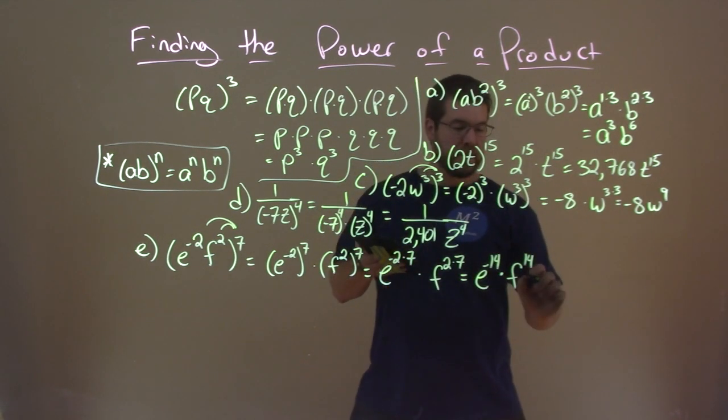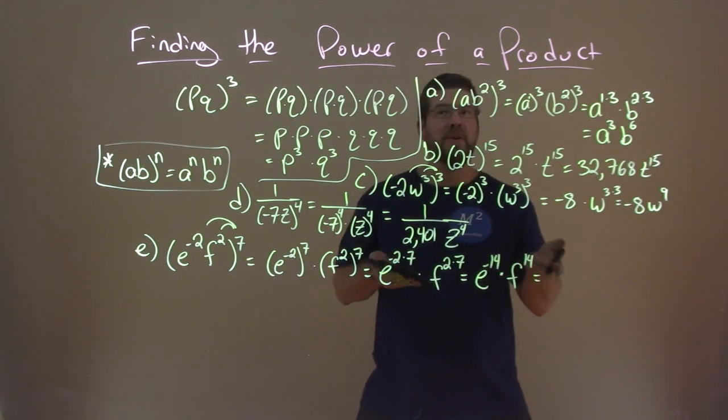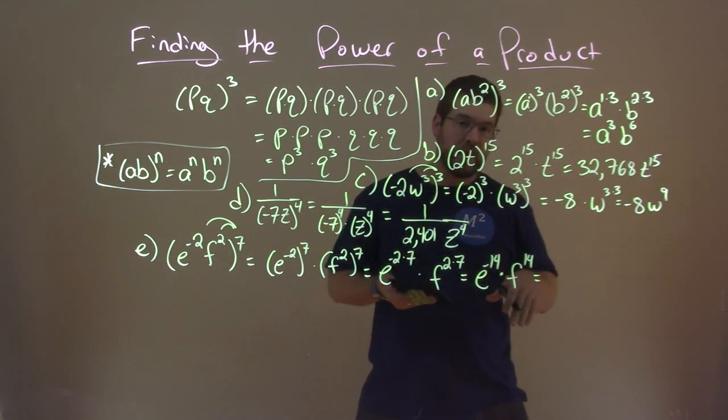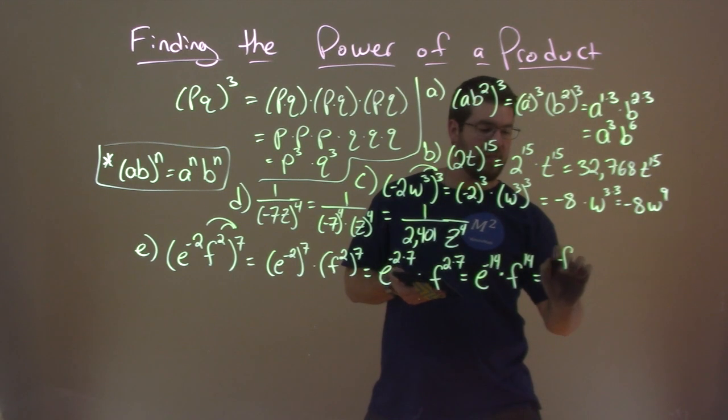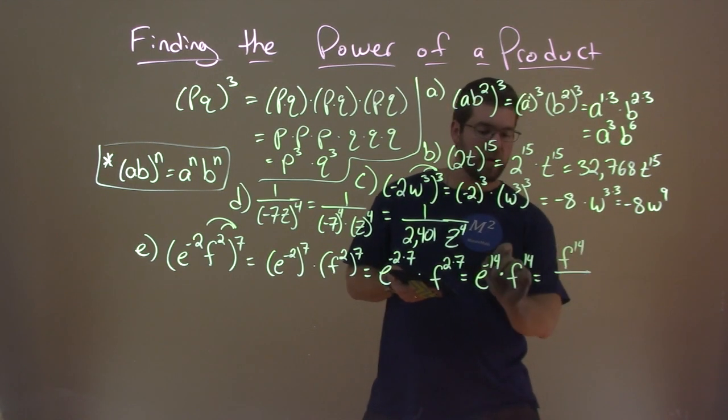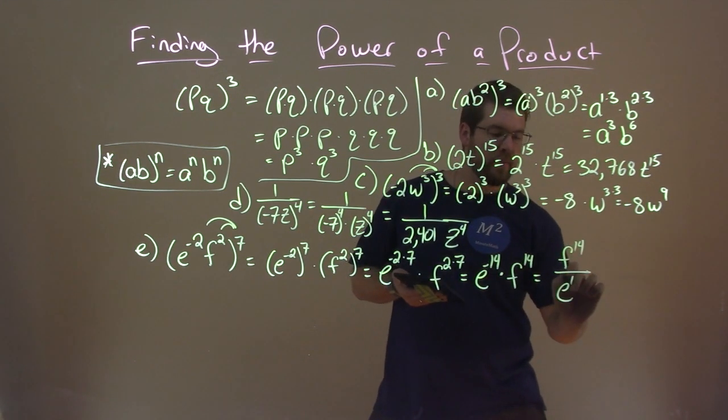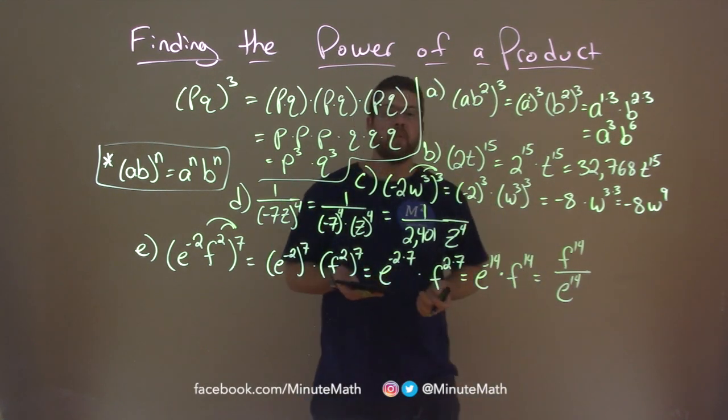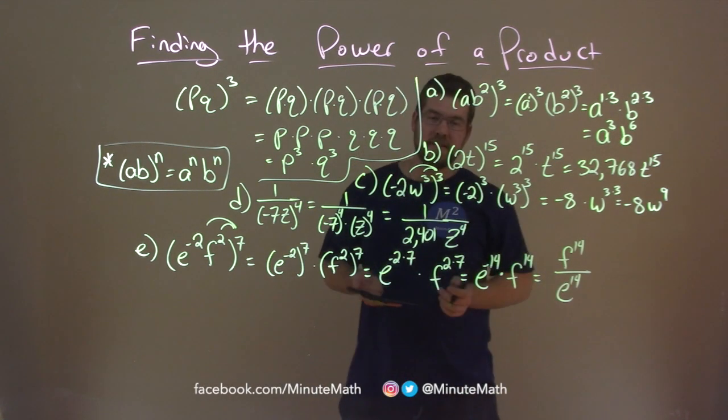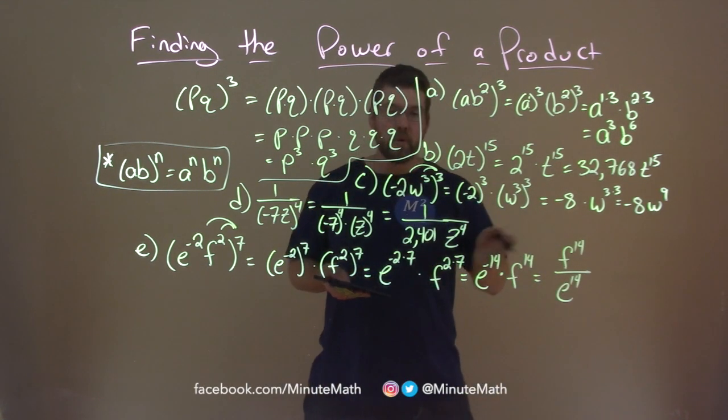So, now from here, negative exponents, we know we can bring that to the denominator and make it positive. So, we just have f to the positive 14 over the e we're bringing down to the positive 14. And there we have our answer. f to the 14th power over e to the 14th power.